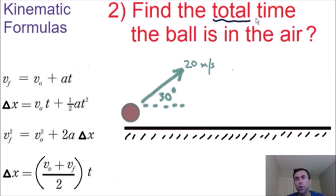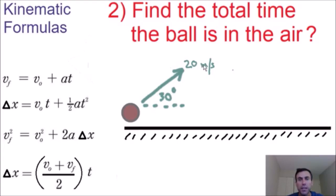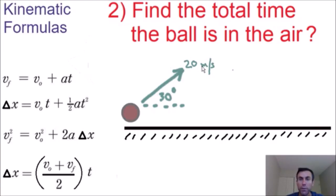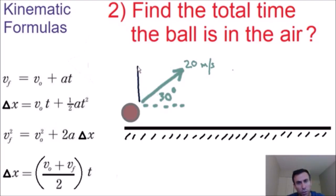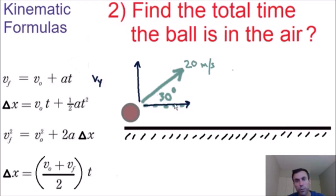We need to find the total time the ball is in the air. Just like in our previous example, we need to separate this velocity into a vertical component and a horizontal component. For most two-dimensional problems, this is the first step you're always going to do. This velocity of 20 meters per second has a vertical component since it's going up, which we'll call Vy, and a horizontal component since it's moving to the right, which we'll call Vx.